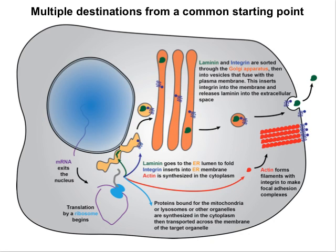In part one of this video, we raised the issue of how different things can get to different places when they all start off being synthesized by ribosomes in the cytoplasm. Much of the everyday sorting that goes on starts in the endoplasmic reticulum, proceeds through the Golgi bodies, and then vesicular traffic sorts these things out to different destinations. That's what we'll talk about here in part two.